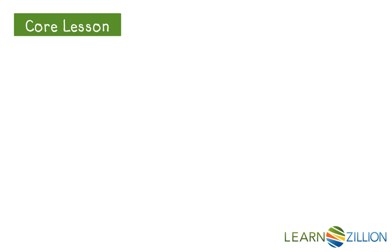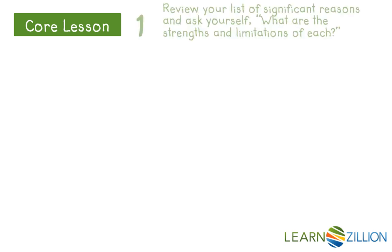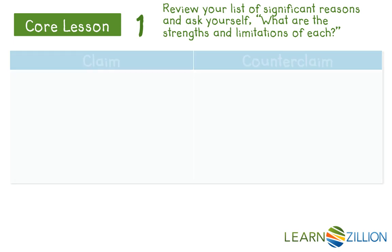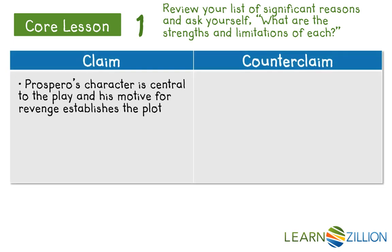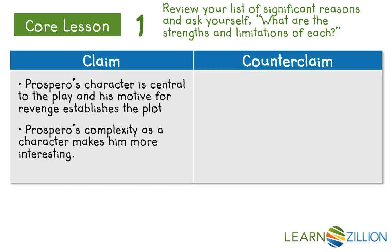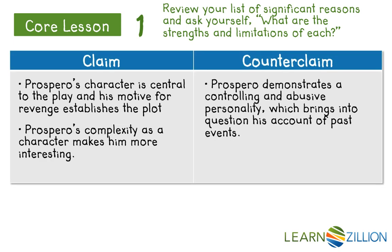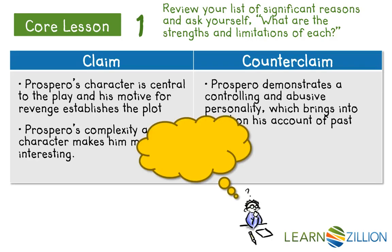Let's go back to the list of significant reasons we made for the claim that Shakespeare wants his audience to empathize with Prospero, and the counterclaim that he doesn't want us to empathize with him. I want to make sure that I'm presenting my claim and counterclaim fairly, and I can do that by asking myself, what are the strengths and limitations of each of these reasons?